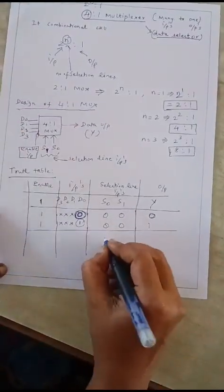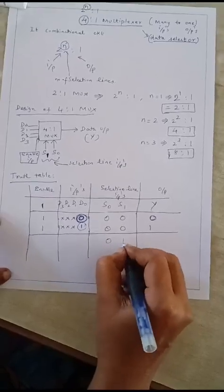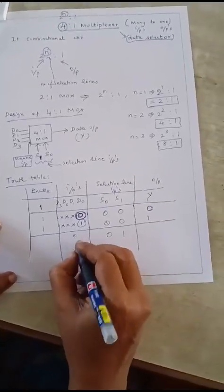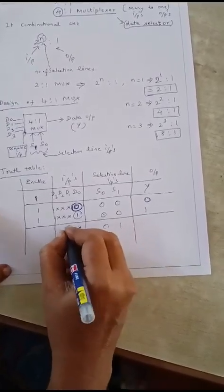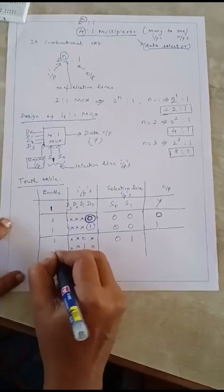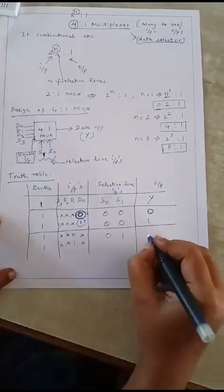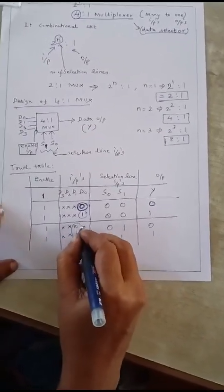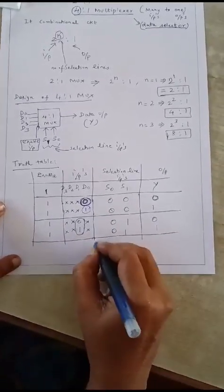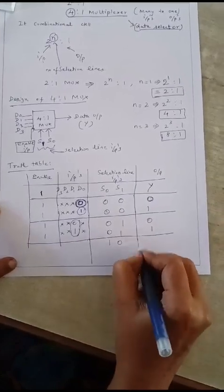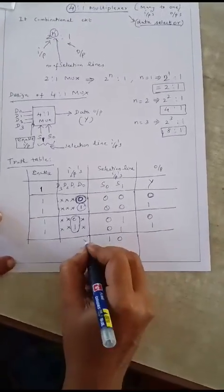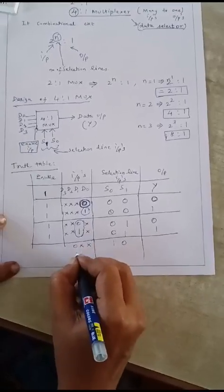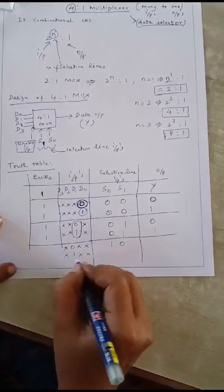For the third case, when the selection line is 1 and 0, the output Y follows the input D2, which can be 0 or 1. The remaining inputs D0, D1, D3 are don't cares, and the enable input remains high.